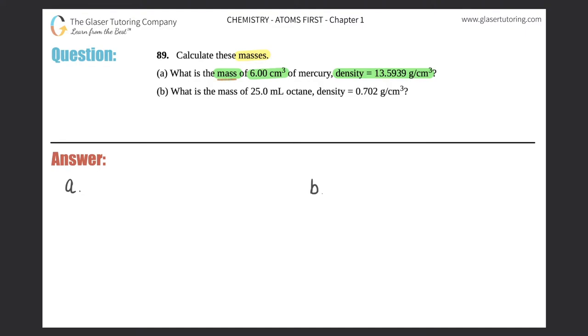We want to know what the mass is, so mass is a question mark. I see that we have centimeter cubed here - centimeter cubed is a form of volume, always 100% of the time. So we have a volume V of 6.00 centimeters cubed, and they gave us a density D of 13.5939 grams per centimeter cubed.